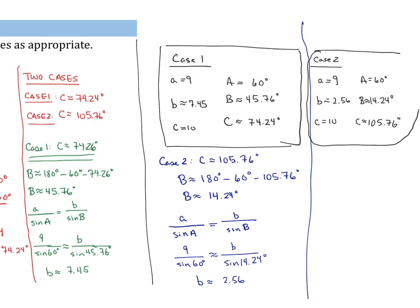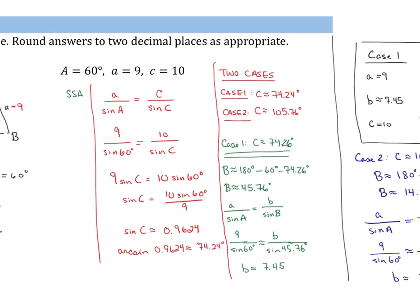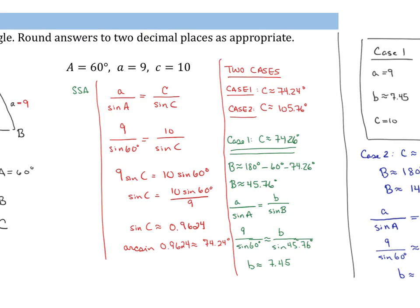The thing to remember about triangles that yield no solution, as in one example, or two solutions, as in the last one, is that this all stems from the fact that these were side-side-angle problems. It is really seen whenever we take the arc sine of our ratio to determine our angle. Any time you use arc sine, you want to be doubly careful.